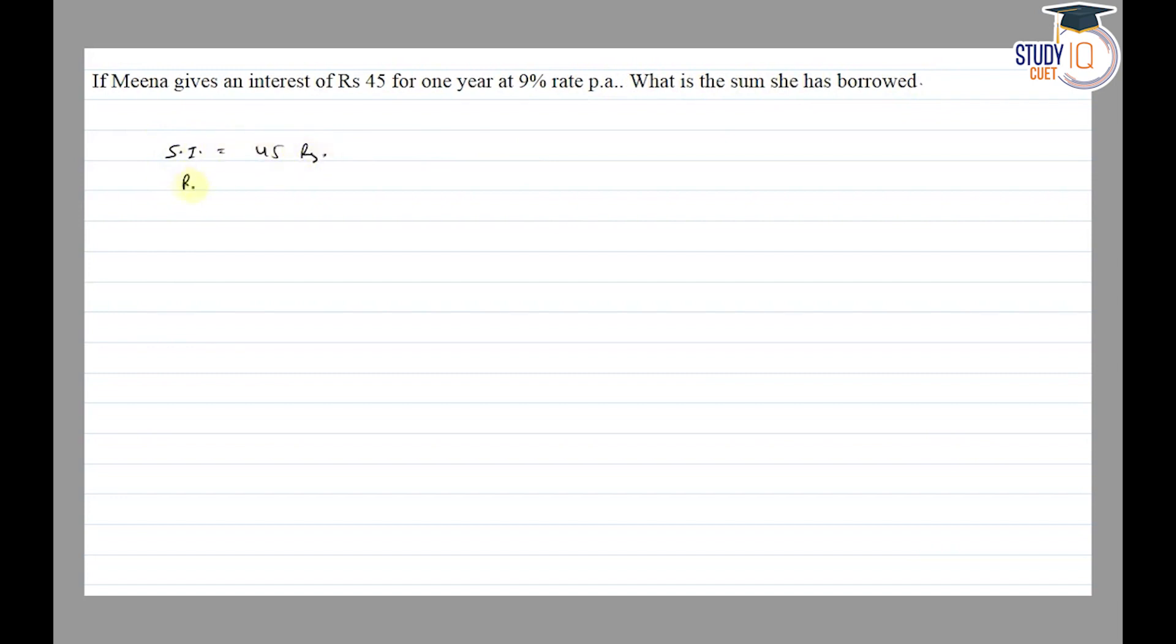Rate given is 9% and time given is one year. We need to find out the principal amount. So, SI = PRT/100. We need to find P, so by cross multiplication, SI × 100/RT. So P = SI × 100/RT.